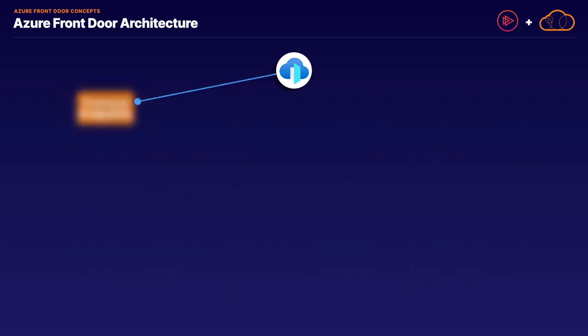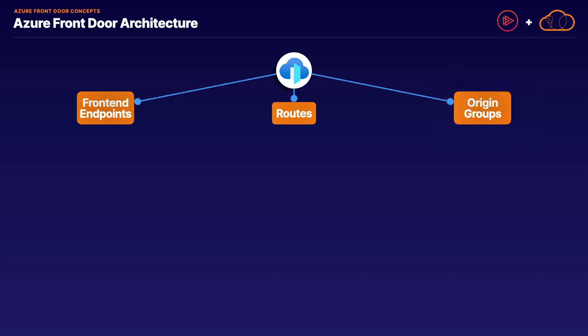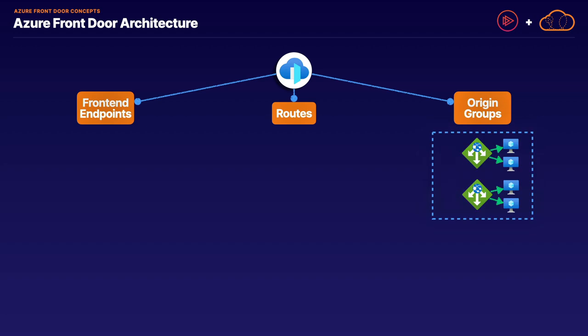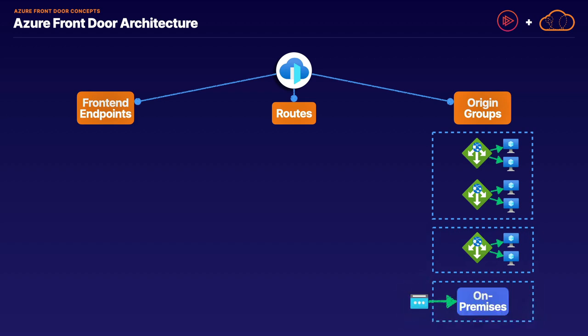For Azure Front Door's architecture, we have our front end endpoints, our routes, and then our origin groups — these are our back end pools and back end resources. In those origin groups we have origins, which can be resources that exist behind a web application gateway and its web solution. That application gateway and all its back end resources would be an origin in that origin group. We can have multiple origin groups with one or more origins, and these can be Azure services or on-premises services, as long as they're reachable over a public IP.